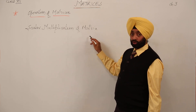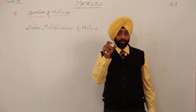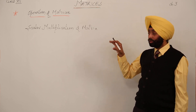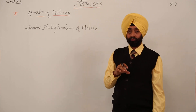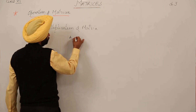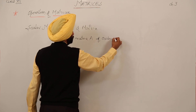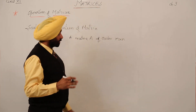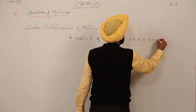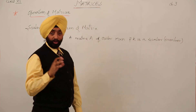Scalar multiplication — what does scalar mean? Scalar means a number. A number can be real or imaginary. Let's begin with a formal definition for the scalar multiplication of a matrix. Suppose we have a matrix A of order m×n, and k is a scalar number — again, k can be real or imaginary.